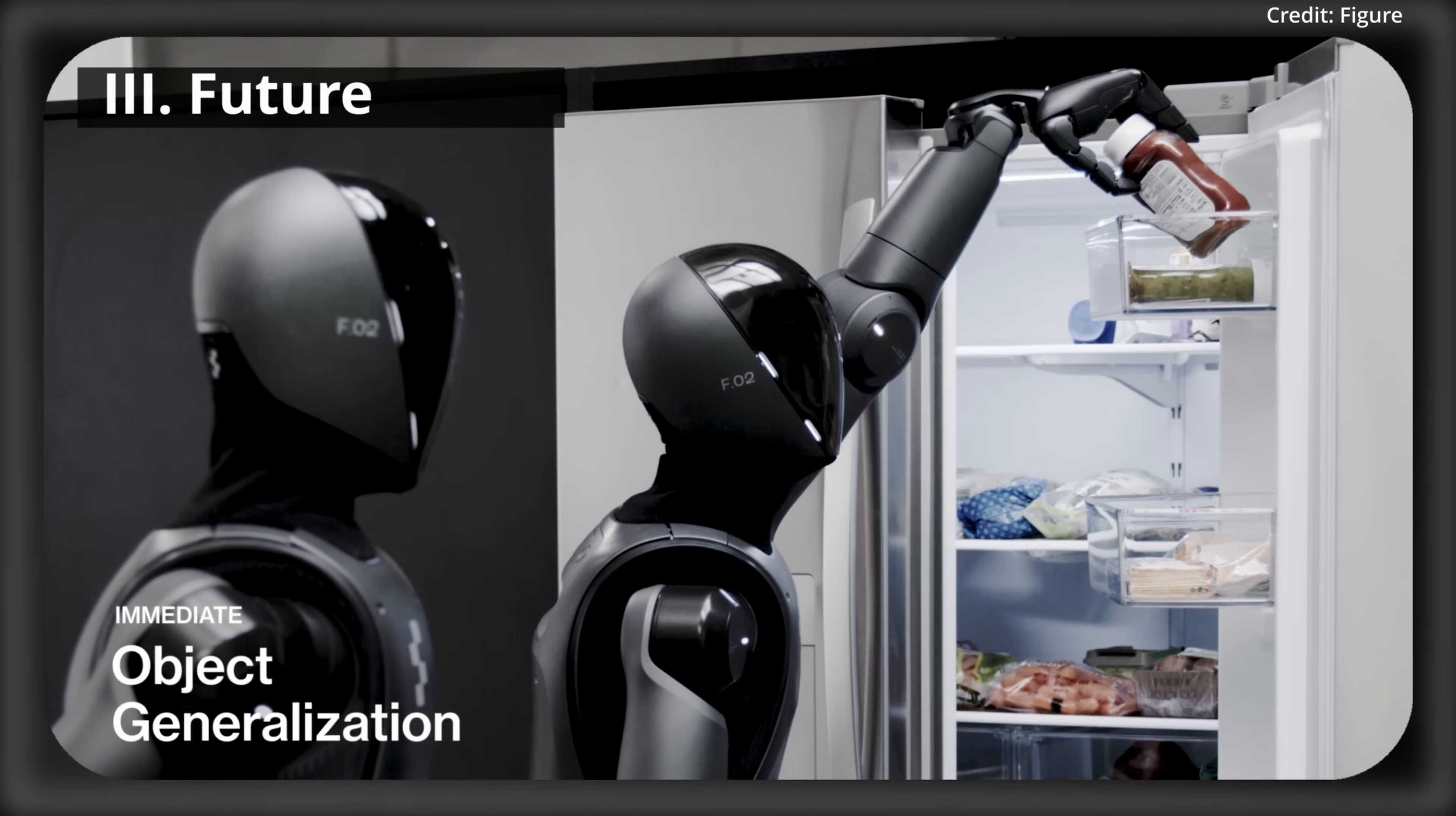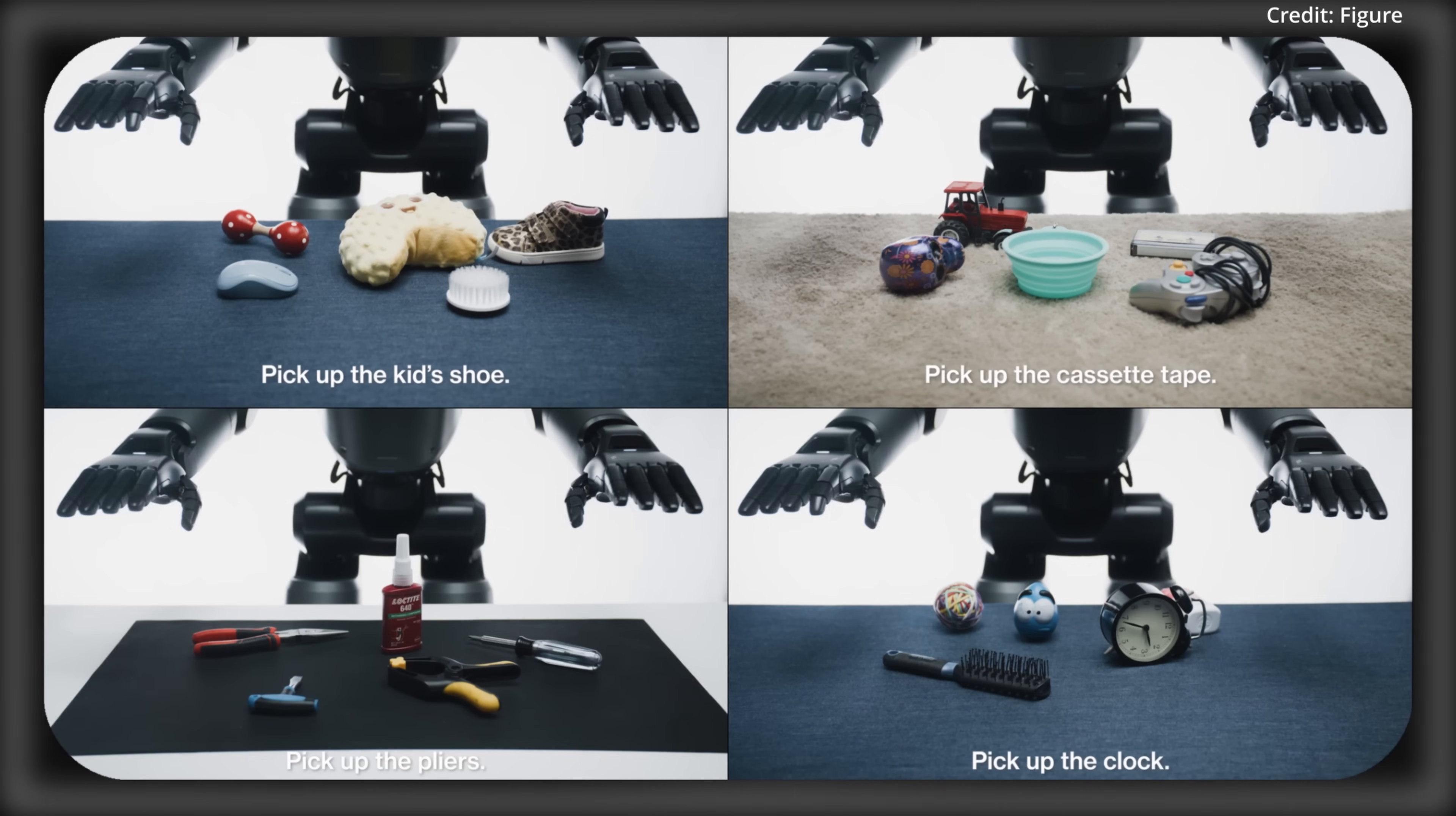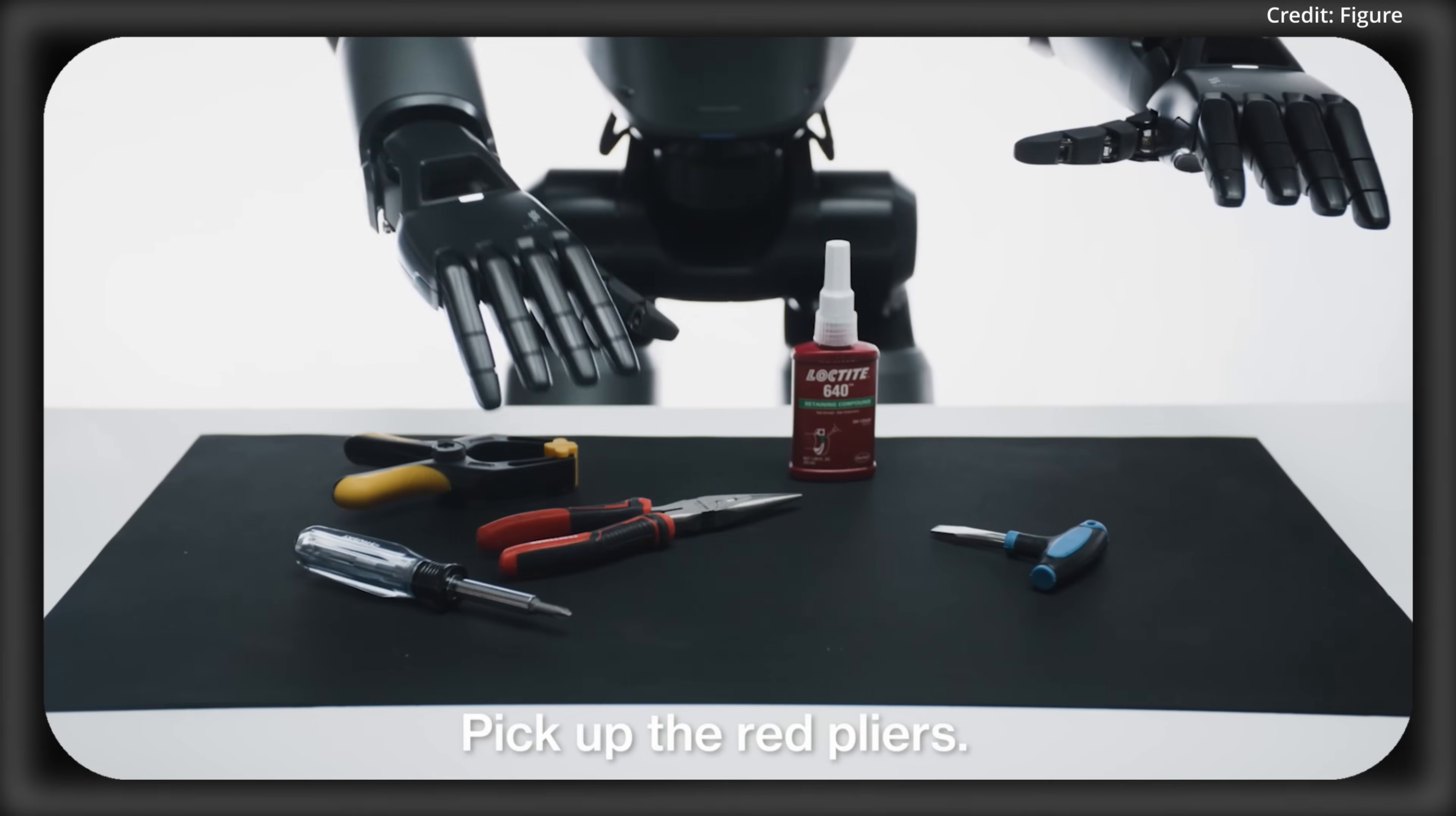And unlike earlier robot systems, Helix generates long-horizon, collaborative, dexterous manipulation on the fly, with no task-specific demos or extensive coding needed. On top of this, it boasts strong object generalization, picking up thousands of novel household items varying in shape, size, color, and texture, simply by request.